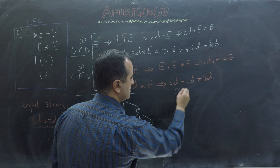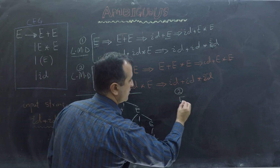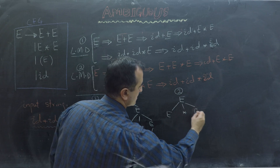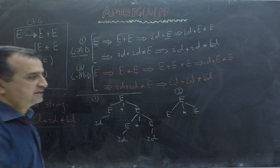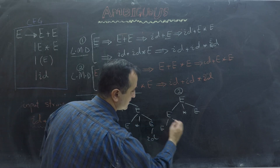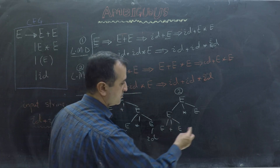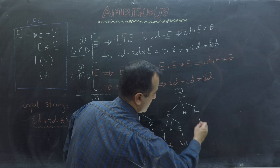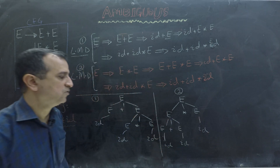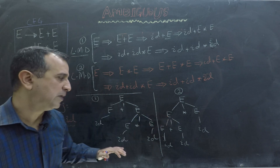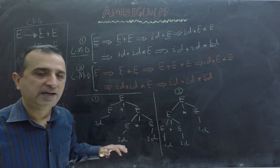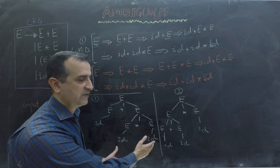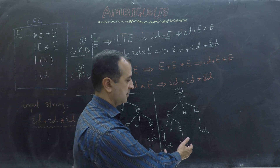Now I create the parse tree for the second leftmost derivation. I start from E, replace it with E times E, then replace the left E with E plus E, and then replace all the remaining E's with id one by one. Note that these two parse trees are problematic because in the first tree we are giving multiplication higher precedence over addition, giving a different result, while in the second tree we are giving addition higher precedence over multiplication.